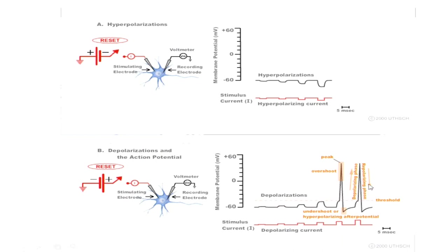Where is the frequency coding here? The action potentials shown are all-or-nothing and very brief — about one to two milliseconds in duration. With a very short stimulus of only a couple of milliseconds, there was only enough time to initiate a single action potential. To see frequency coding, we need a longer duration stimulus.